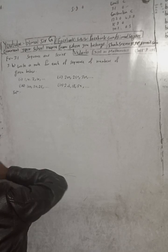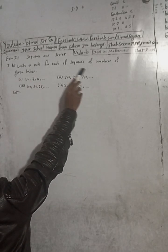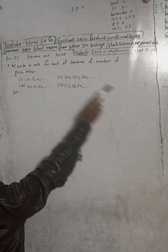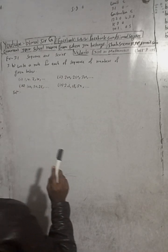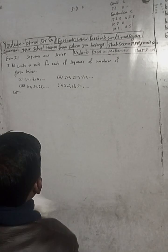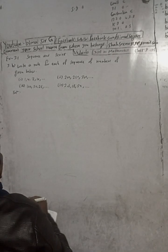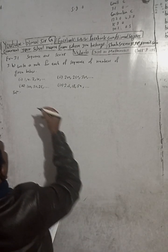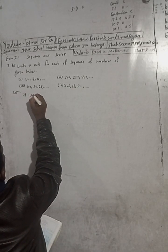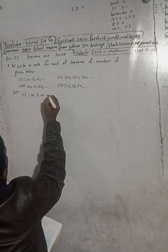So let's begin the solution. Here is 3B: write a rule for each of the sequences of numbers given below. There are 4 questions and we have to write a rule. The given sequence is: 1, 4, 7, 10.